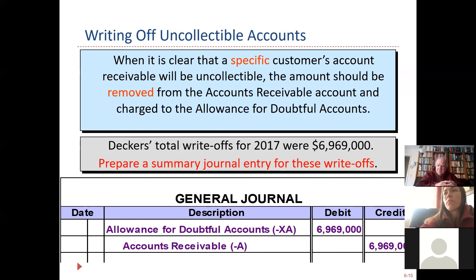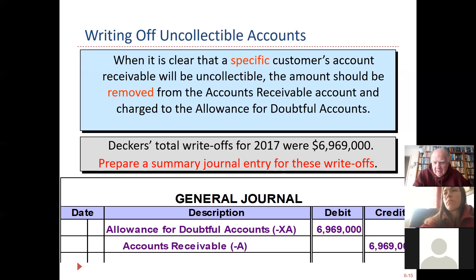If you can get this part of the chapter under control, it's a big help. Decker had actual write-offs of $6,969,000 — almost $7 million. Let's pretend this is just one company. You're hoping to get paid, you've been calling this person, and then one day you pick up the newspaper and see the company is broke and the person is being led into jail in handcuffs. That's the point where you write them off.